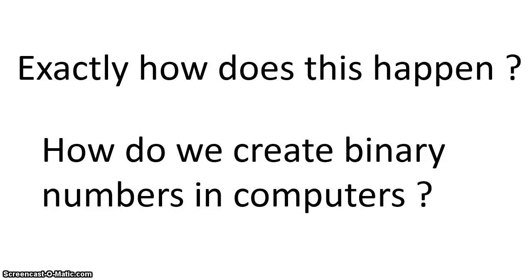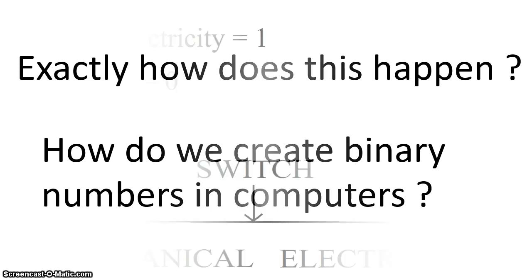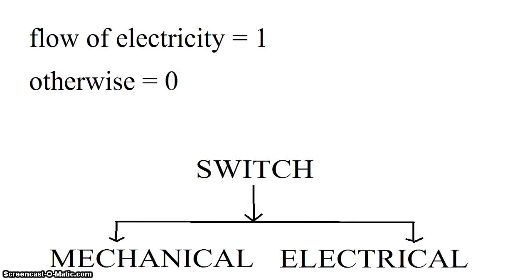We store the information in the binary system. The binary representation is based on electrical current — if we have electricity flow, we have 1; if there is no electricity flow, we have 0.